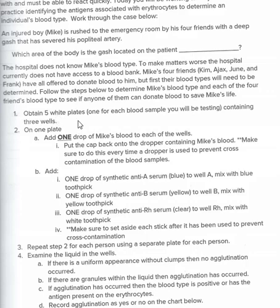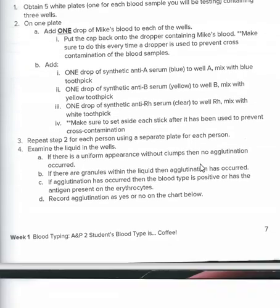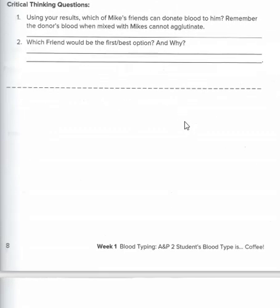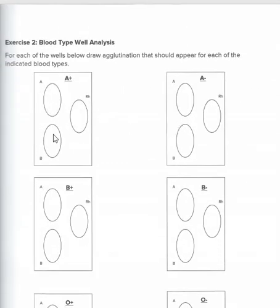You'd take five plates, put three drops of each person's blood, add anti-A antibodies to the first drop, anti-B antibodies to the second drop, and the rhesus monkey factor to the third. Then mix it up, write down the results in a table, and determine whose blood is compatible with Mike's for a possible transfusion.